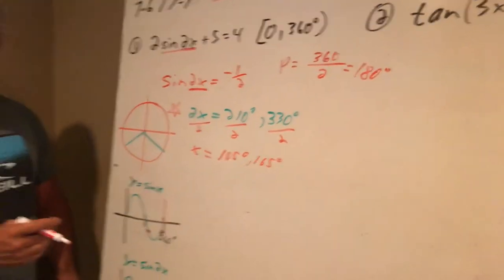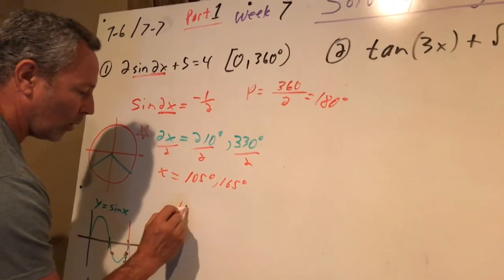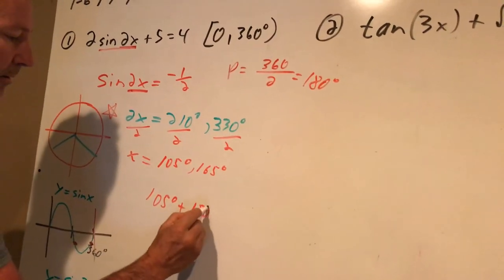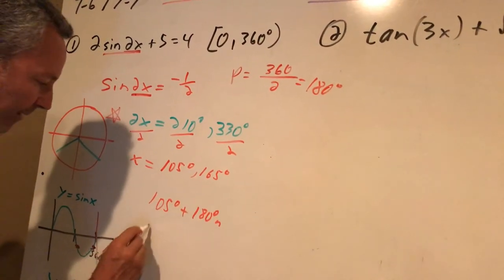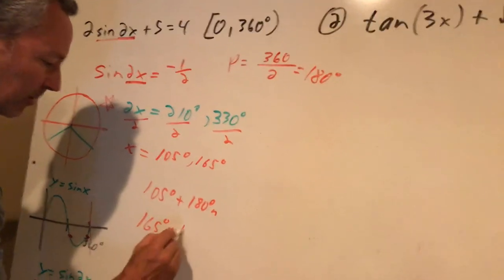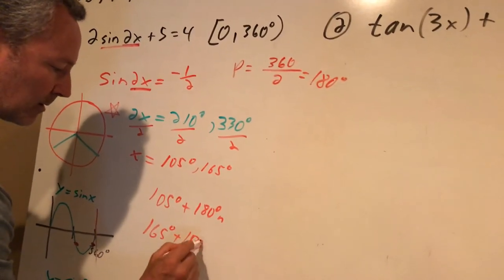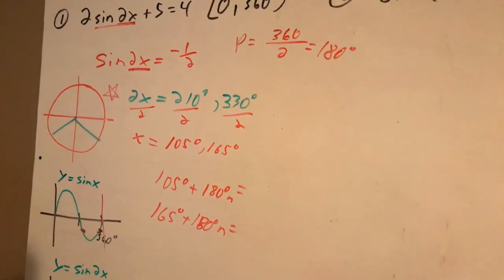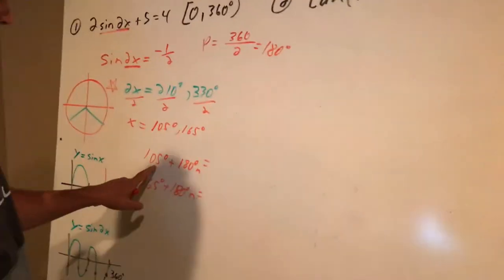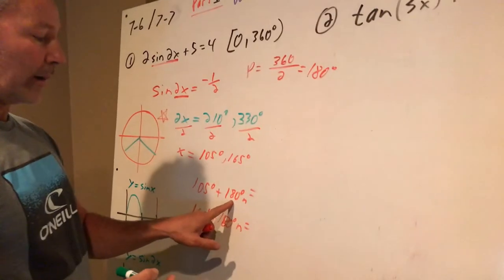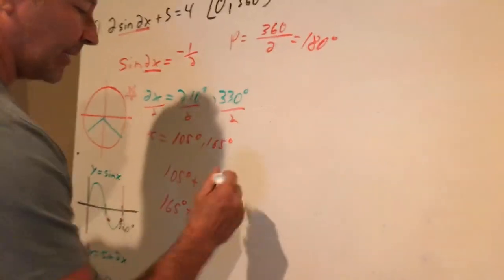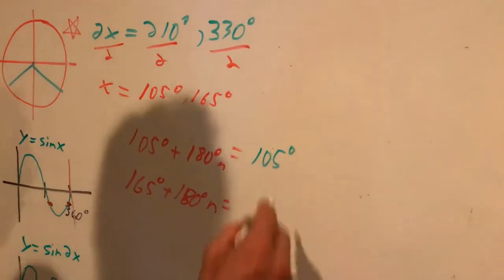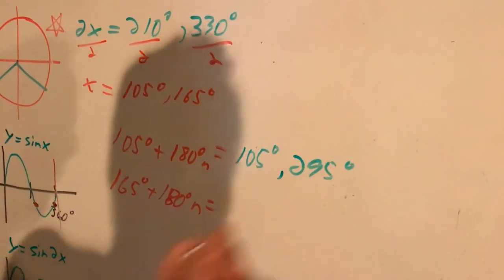And then we talked about adding the period. So what I'm really going to do is write 105 degrees plus the period, which is 180 degrees. And then I have 165 degrees plus the period times n. And I have to calculate these out. I can't just leave that. I want all the answers that lie within 0 to 360. So first of all, 105 is a good answer. If I add 180 like 0 times, that's 105. That's one of our answers. 105 degrees. 105 plus 180 is going to be 285 degrees.